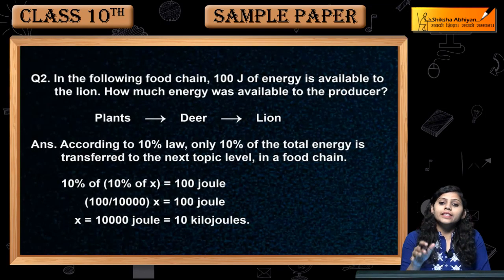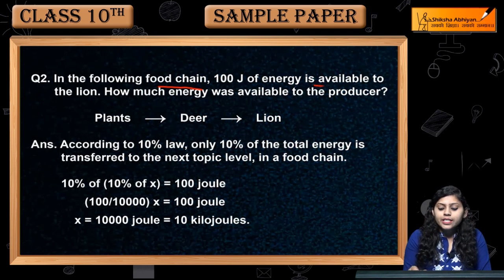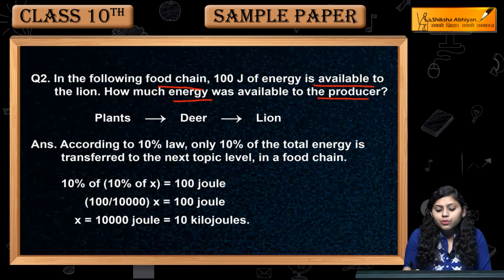Question number 2. In the following food chain, 100 joules of energy is available to the lion. How much energy was available to the producer?